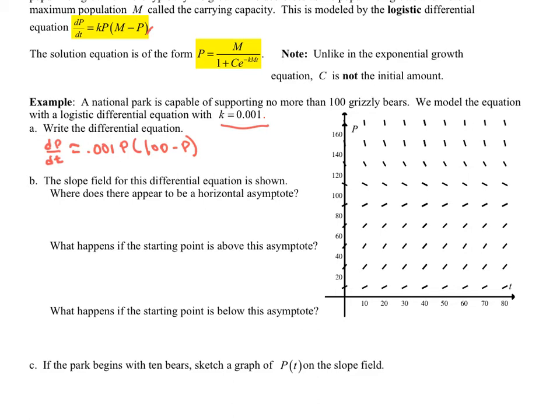Part B says, the slope field is represented over here. Where do we have a horizontal asymptote? Where does it look like? Well, I hope that you can see that it's right here at 100. Horizontal asymptote. Why? Well, that would be what my carrying capacity would be for this population. So I'm going to be approaching that as we go on.